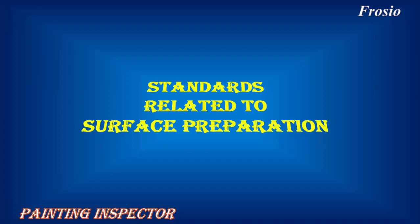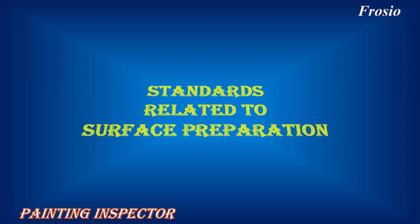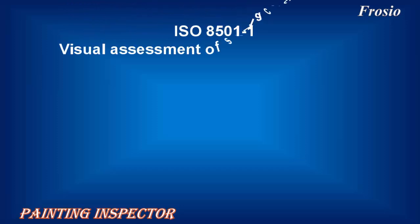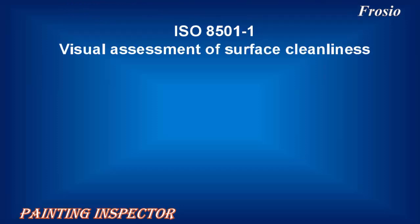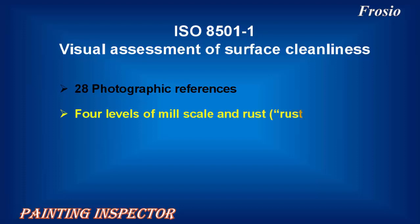Standards Related to Surface Preparation. ISO 8501-1 covers the visual assessment of surface cleanliness and includes 28 photographic references. It defines 4 levels of mill scale and rust present on the steel surface prior to preparation.